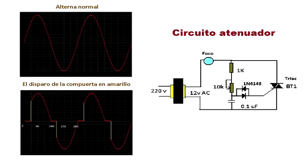By varying the speed of charge and discharge, the firing falls to higher angles of the cycle, and therefore it will lower the intensity of the bulb that is connected, without varying the frequency of the alternating voltage.